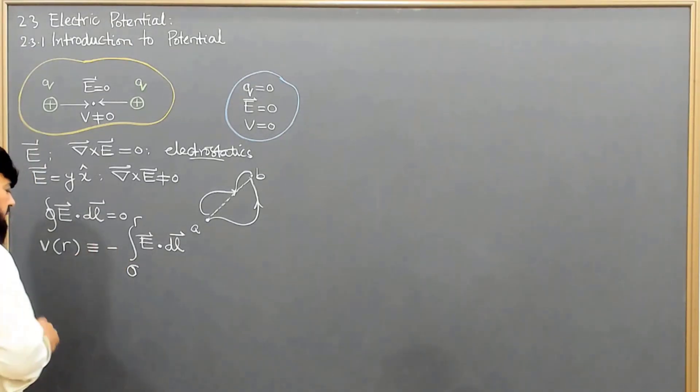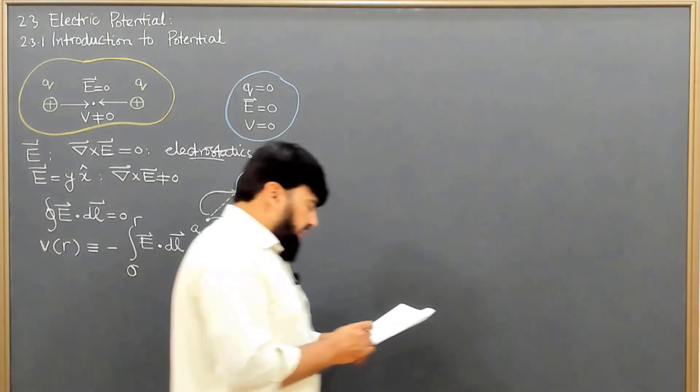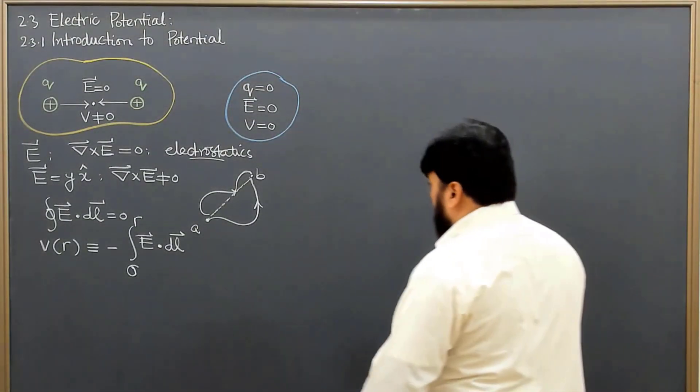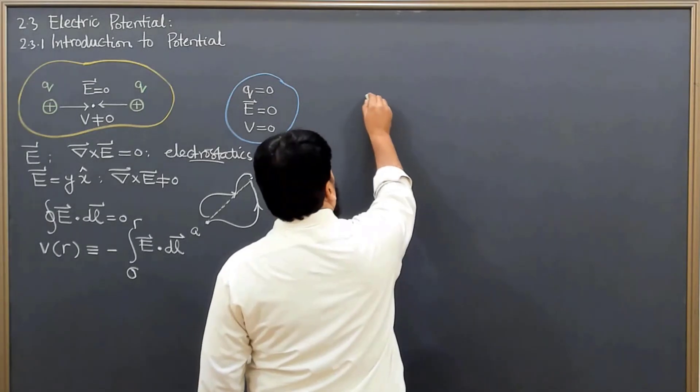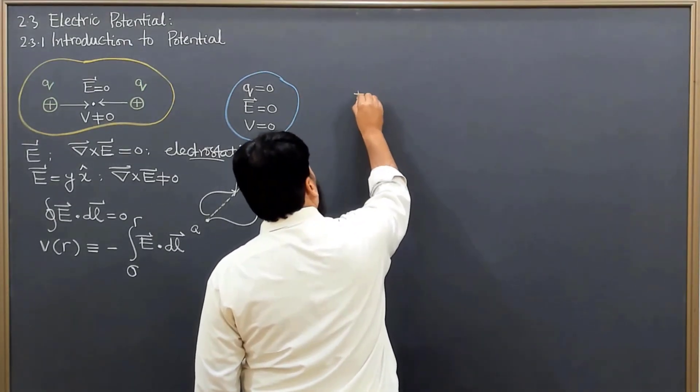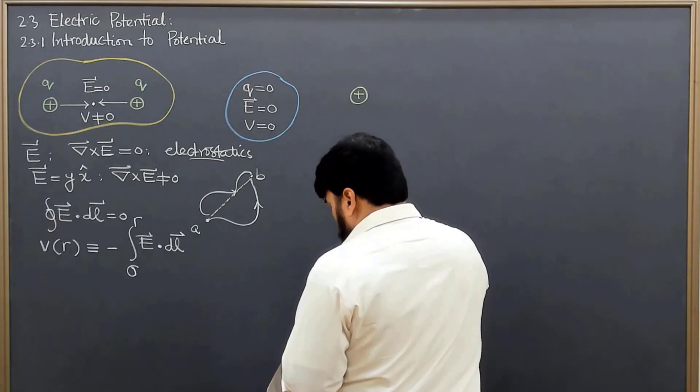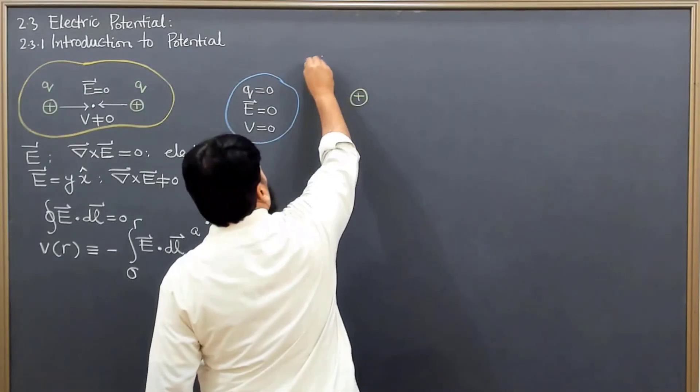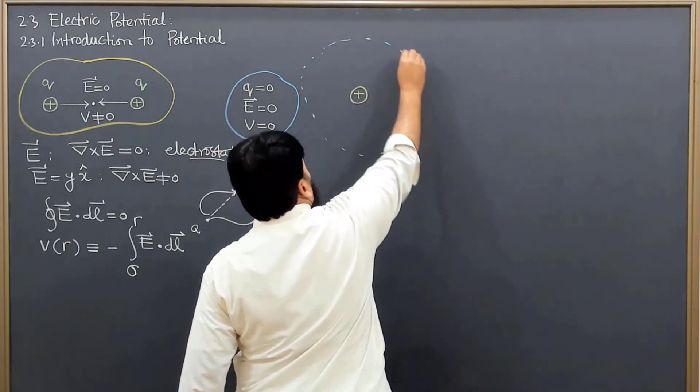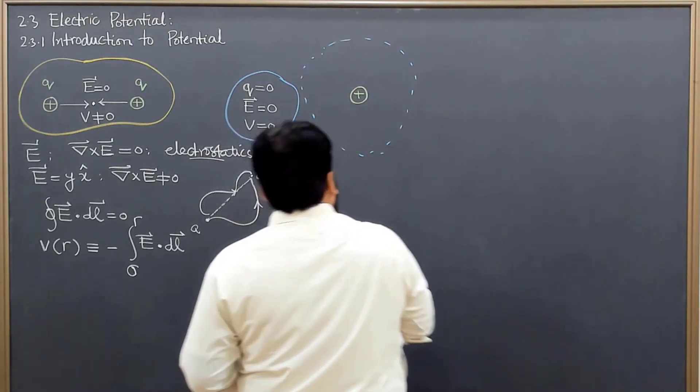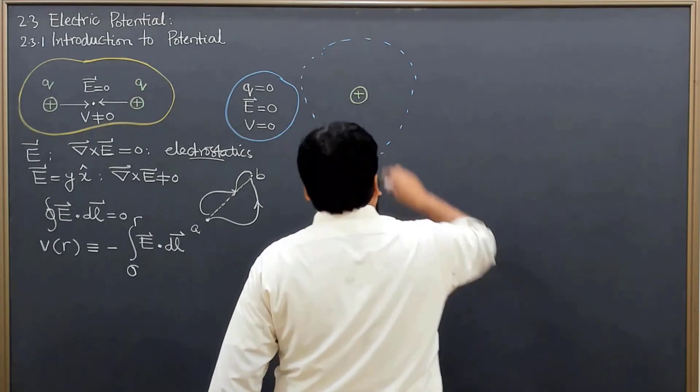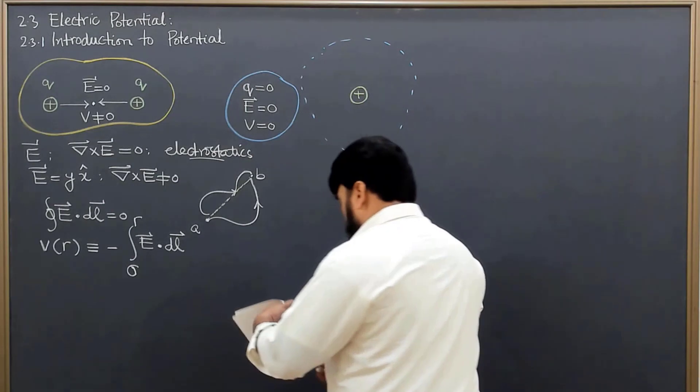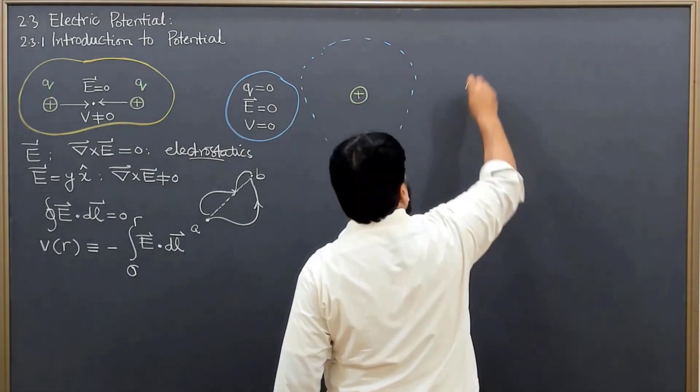Now why we are having a minus sign here, I will explain all these things. For example, we are having a positive charge here and this is the vicinity in which this charge is having its impact. The impact extends to infinity and this is the region that I have enclosed here.